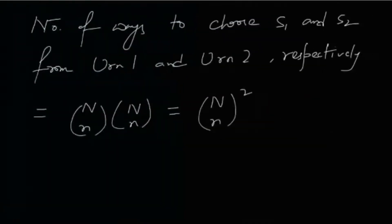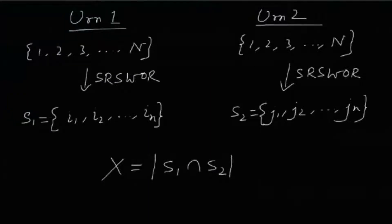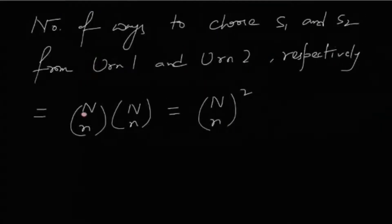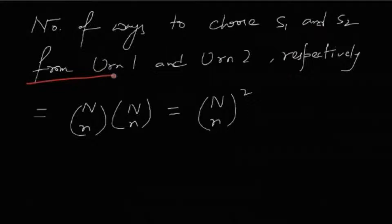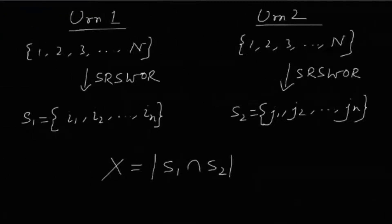The entire experiment consists of choosing a sample from urn 1 and then a sample from urn 2. The total number of ways to do this is N choose n times N choose n, which equals (N choose n)², by the multiplication principle.